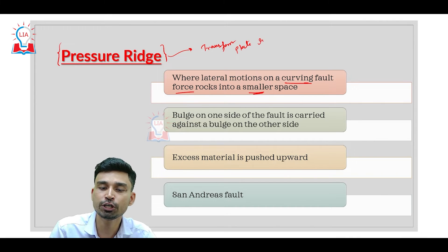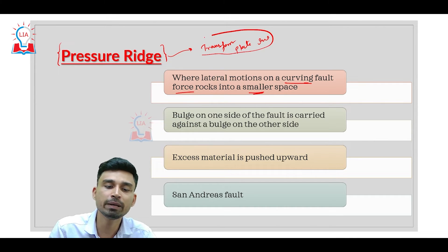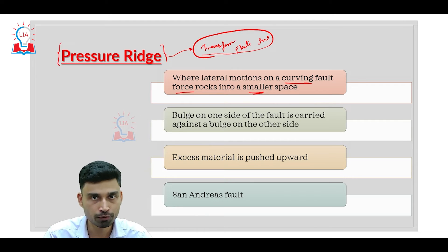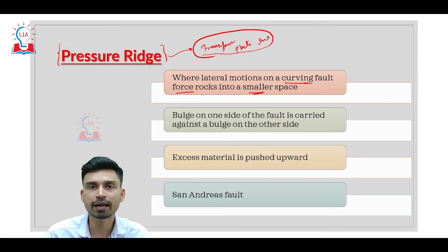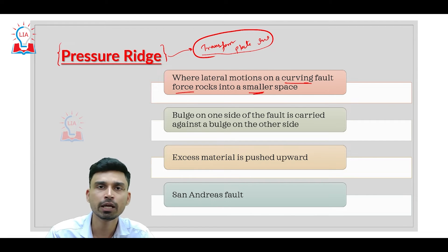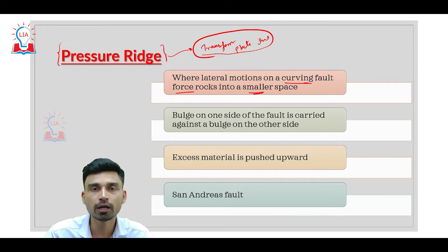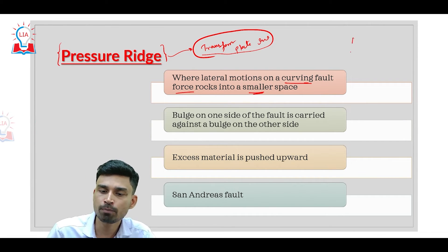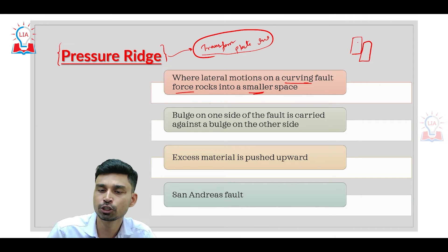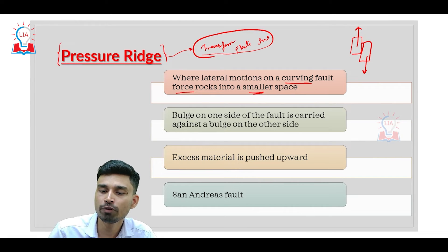There are three major types of plate interaction: convergence, divergence, and transform plate interaction. Transform plate interaction refers to the kind where two plates are neither coming toward nor moving away from each other, but are simply sliding past each other along a common boundary. For example, plate one might be moving in one direction while plate two moves in the opposite direction along this common boundary.